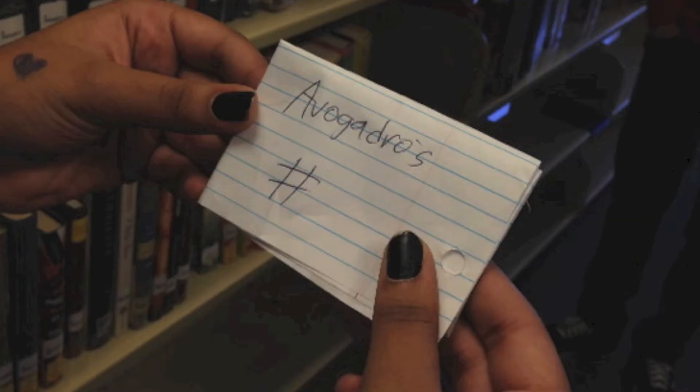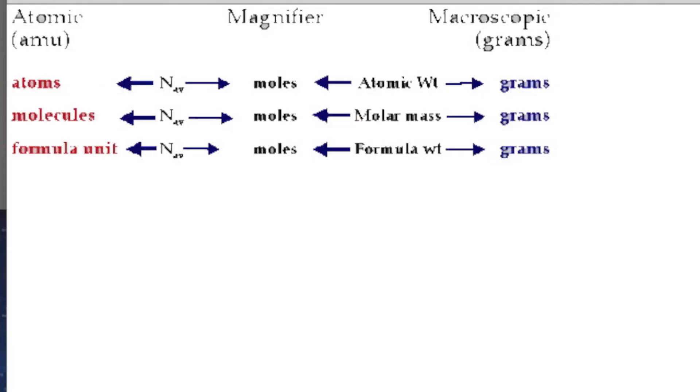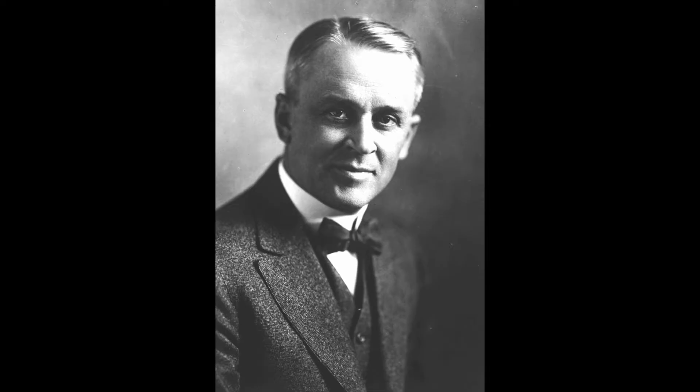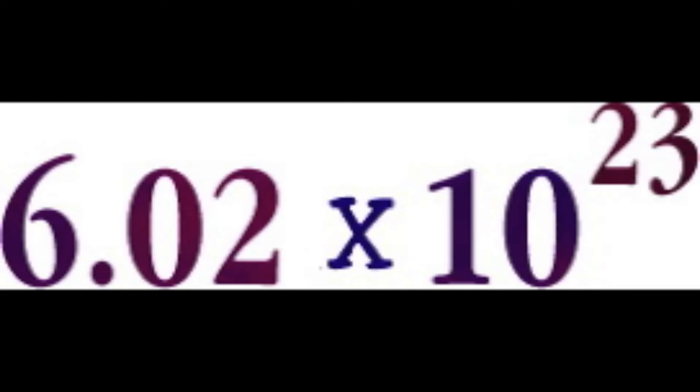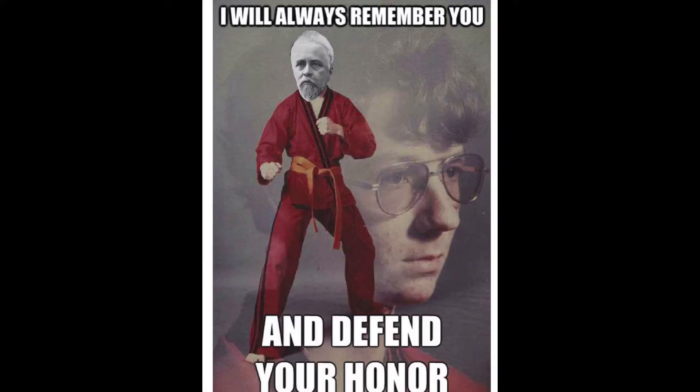To get the accurate determination of Avogadro's number, the measurement of a single quantity on both the atomic and macroscopic scales using the same unit was required. Robert Millikan made this possible by measuring the charge of the electron. The charge of a mole of electrons is called a Faraday. If you divide the charge on a mole of electrons by the charge on a single electron, you obtain a value of Avogadro's number of 6.02 times 10 to the 23rd power particles per mole. Jean Baptiste Perrin gave the name of the number in honor of Avogadro.